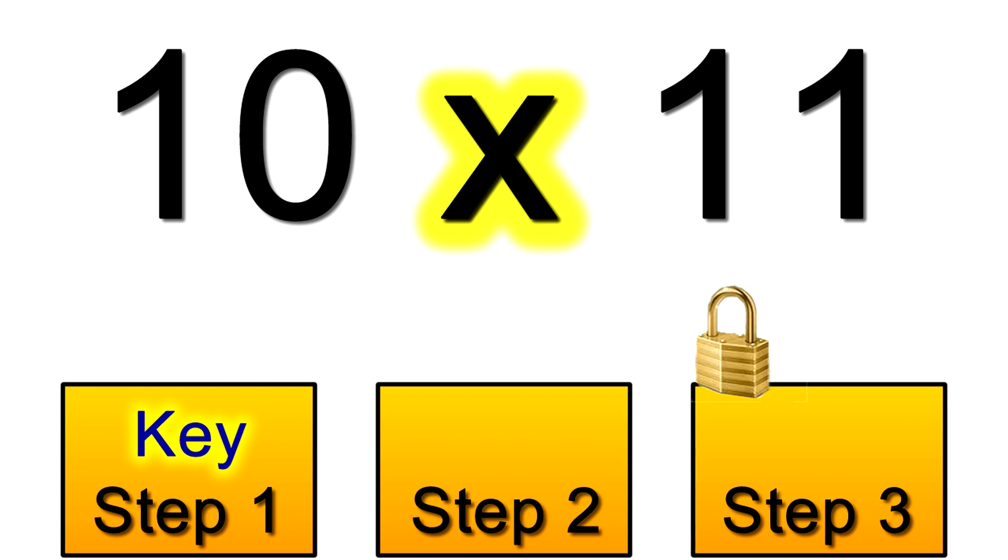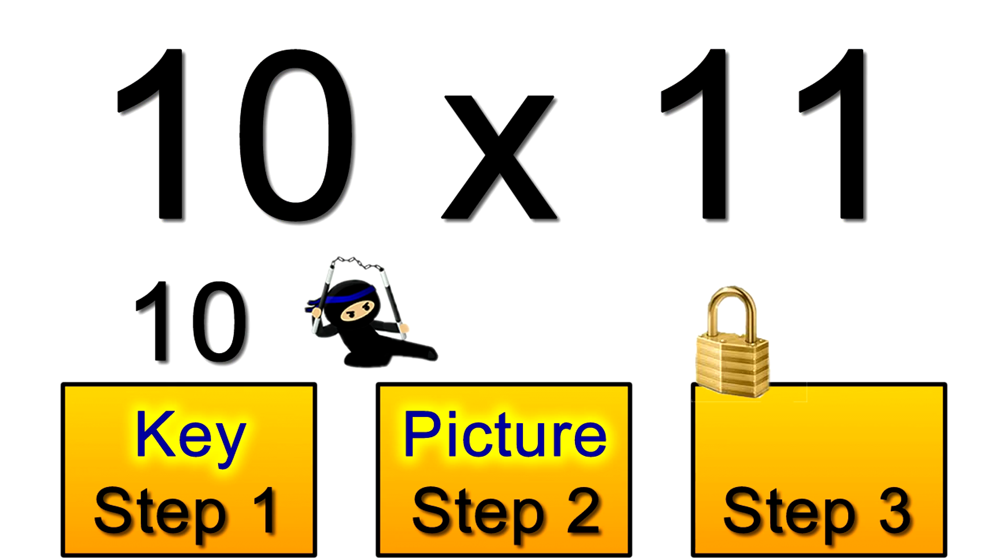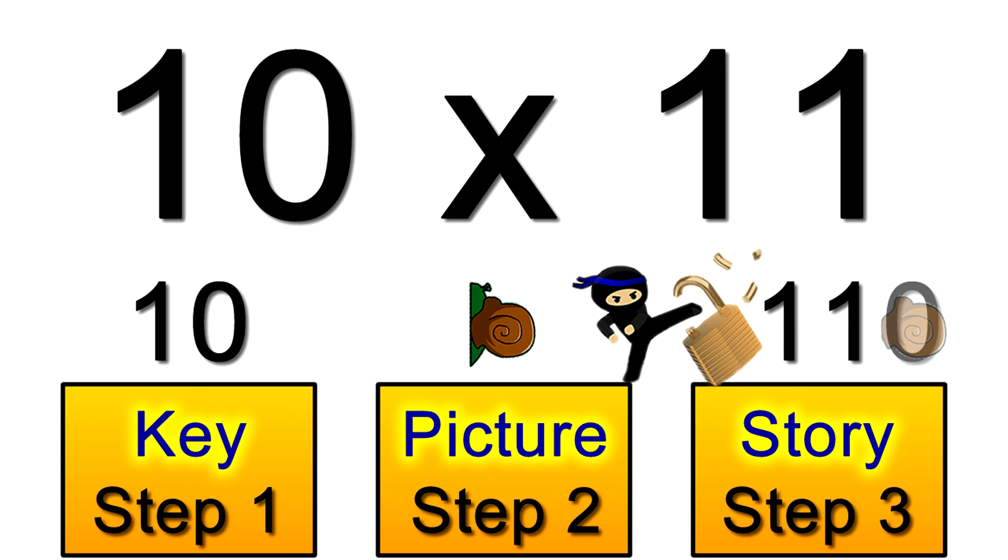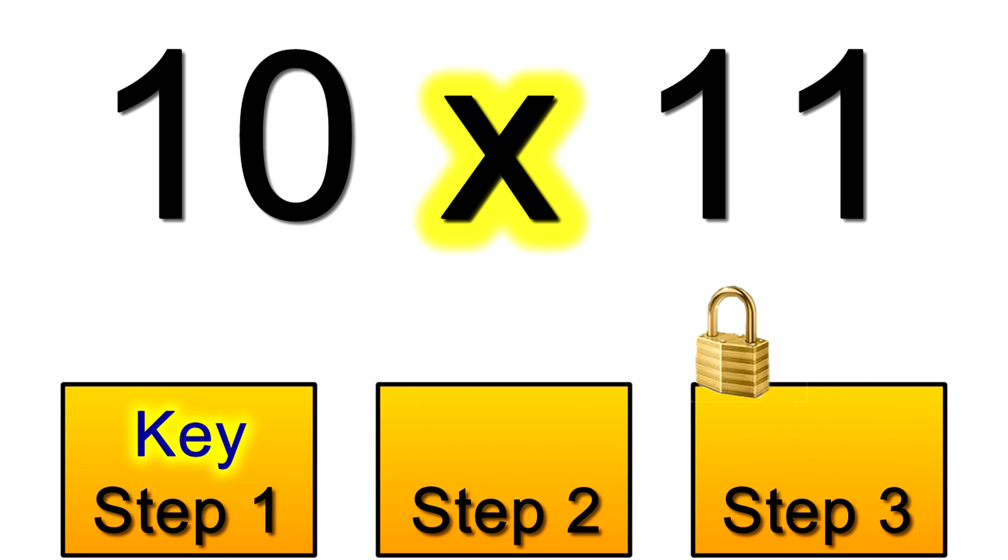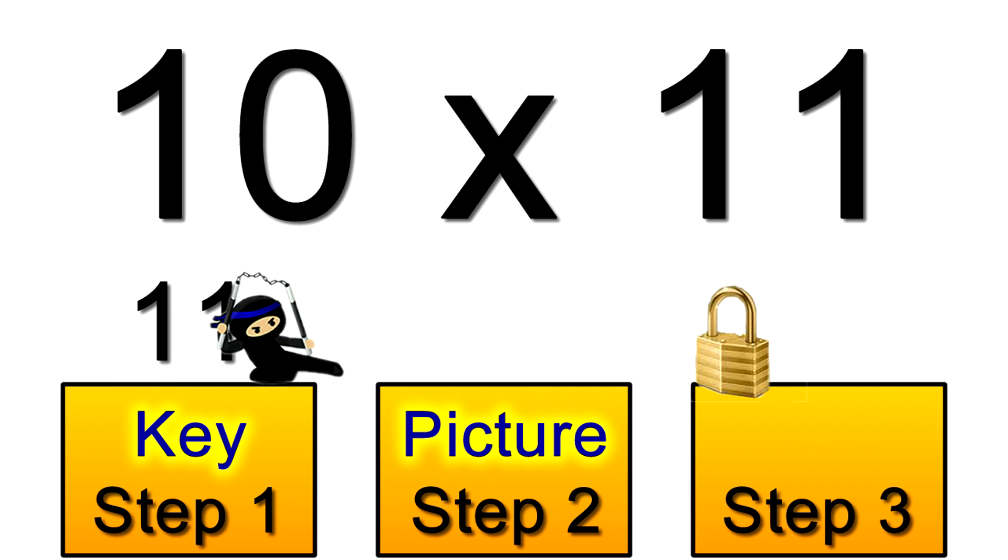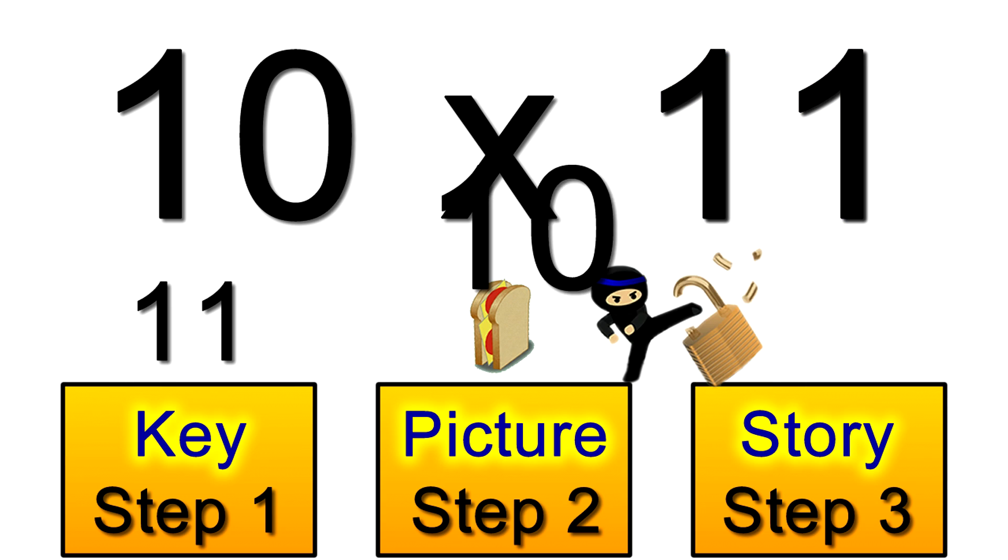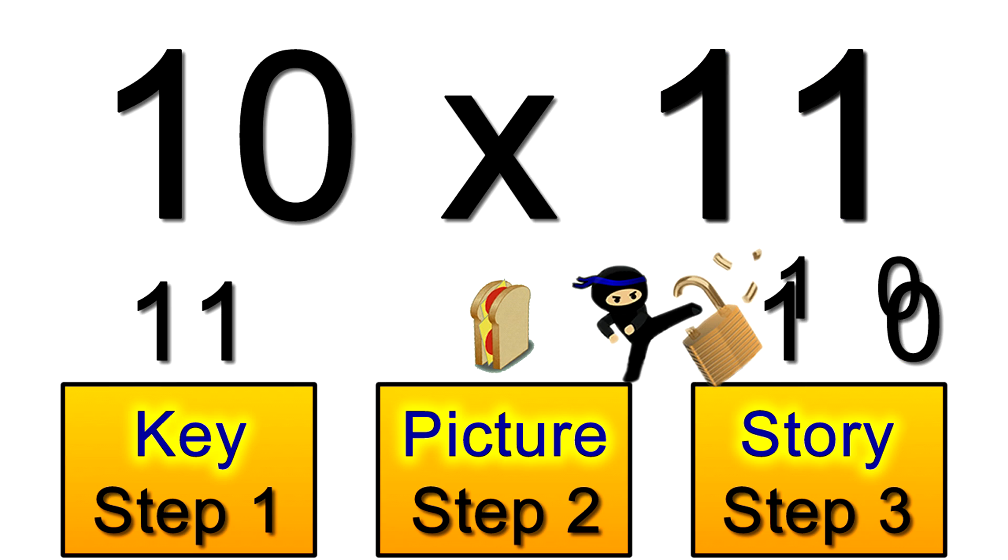For example you've seen how the snail works for 10s and how the sandwich works for 11s. So which one would you use if you had to do 10 times 11? Would you find it faster to do that snail story and put a zero on the end of 11 to get 110? Or would it be faster to make a sandwich with 1 and 0 on those two slices and then adding them together to put another 1 in the filling? You see you still get to 110, but the snail was much faster.